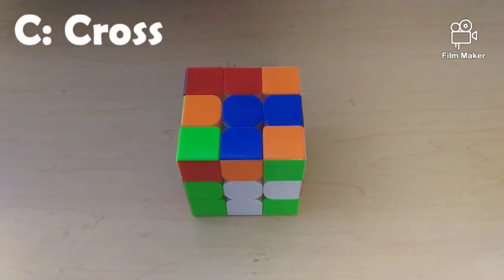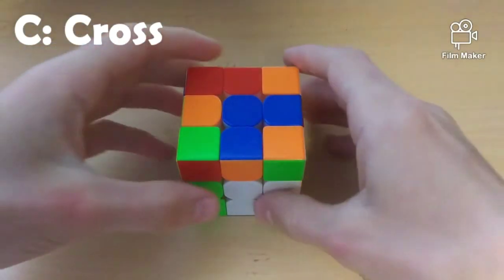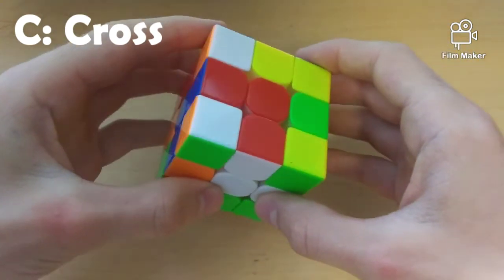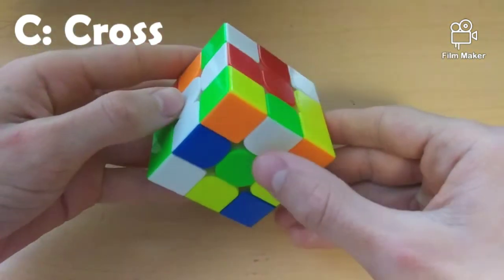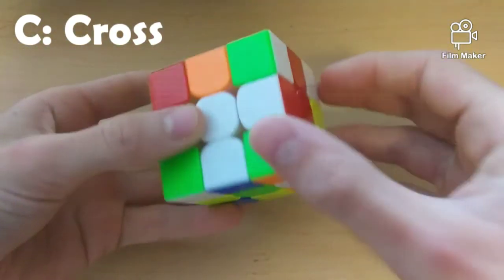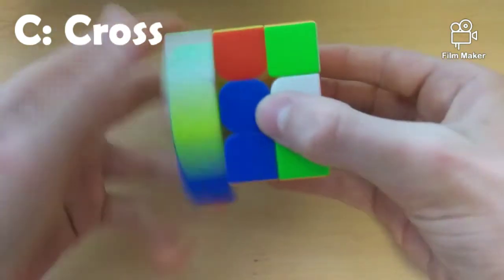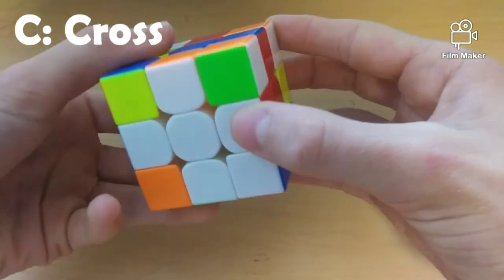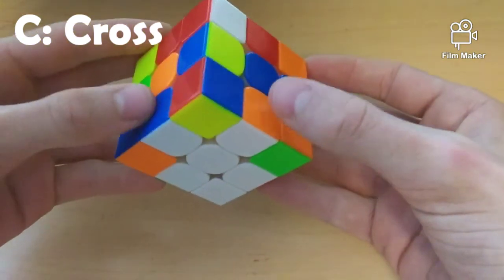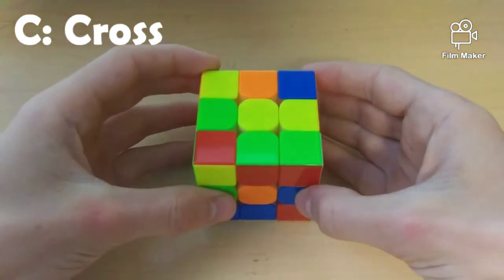So, we will start off with the cross step. And as shown in the intro, it does not matter which way you solve the cross. So, we are going to use this as our advantage, and solve it in the quickest way possible. So, notice this can go down, this can go down, over down. And that was the fewest moves I could find. And it is solved incorrectly, but that is okay.